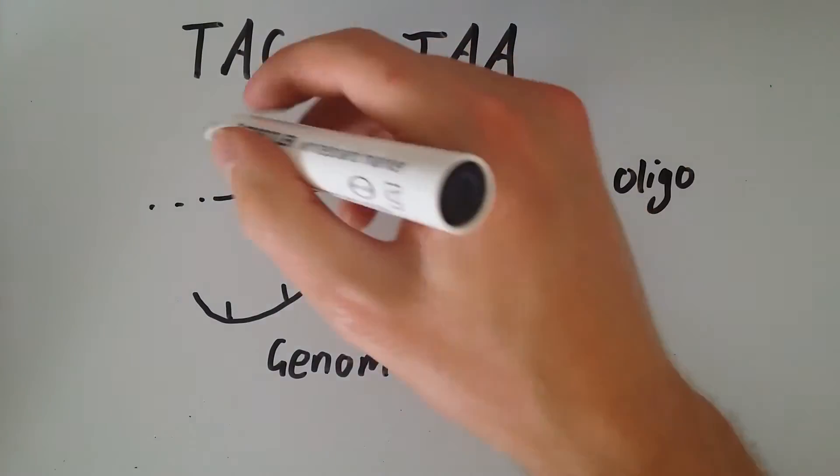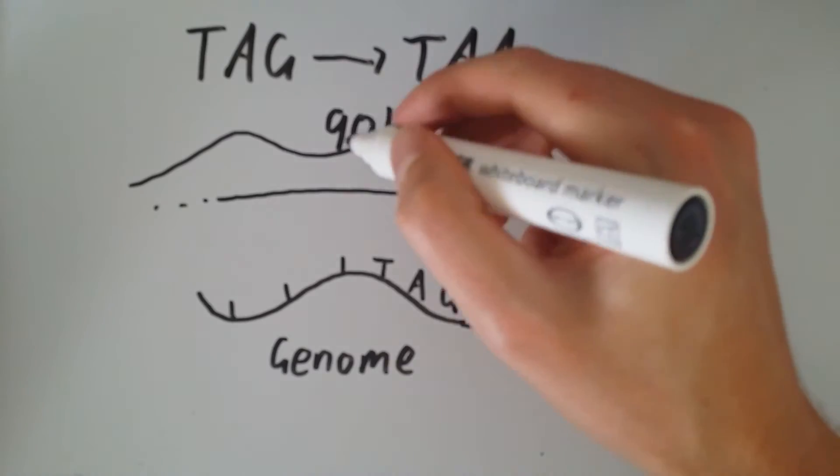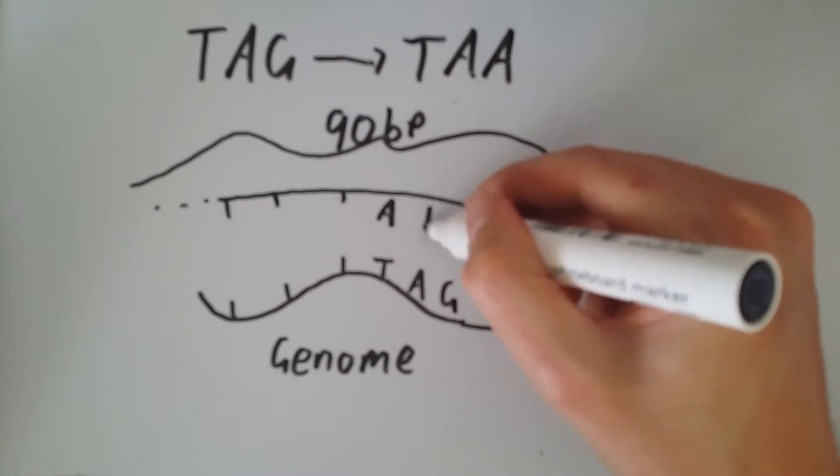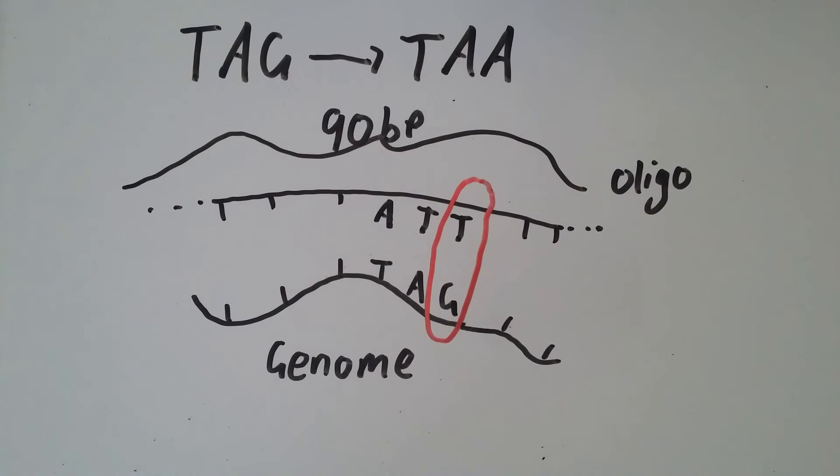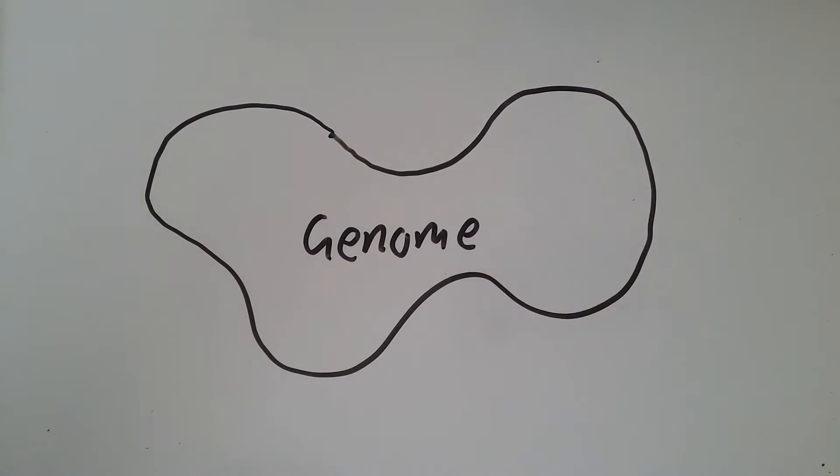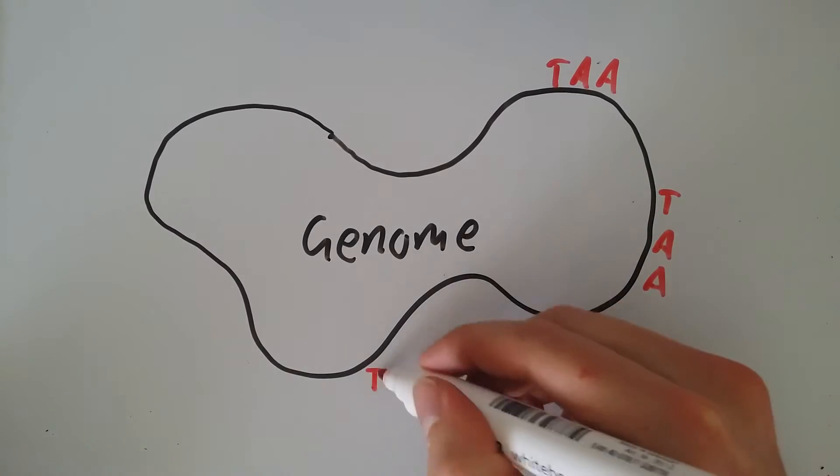90 base pair oligos were designed to target each of these 314 regions, with each oligo having a single nucleotide change in the middle of its sequence. Following multiple MAGE cycles, 4 TAG stop codons had been replaced.